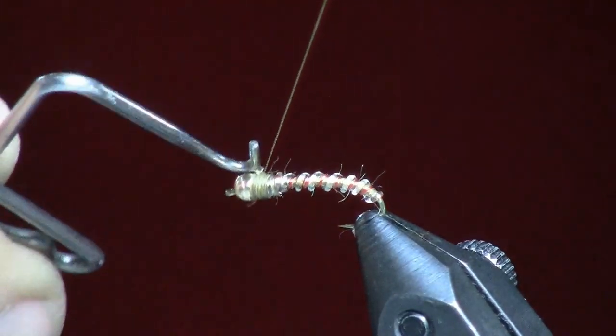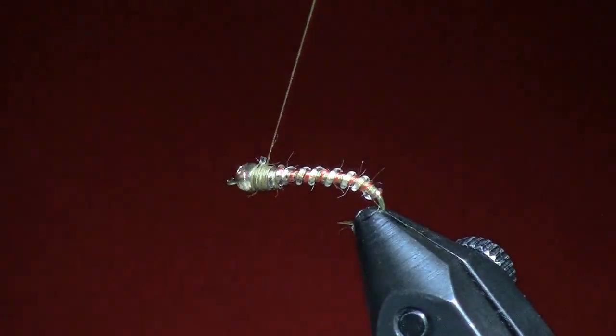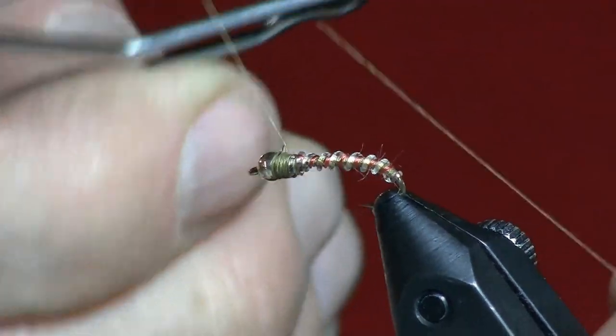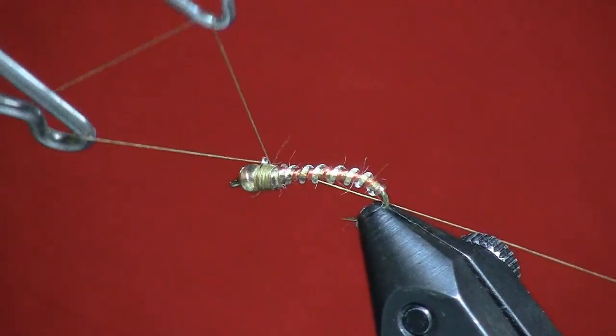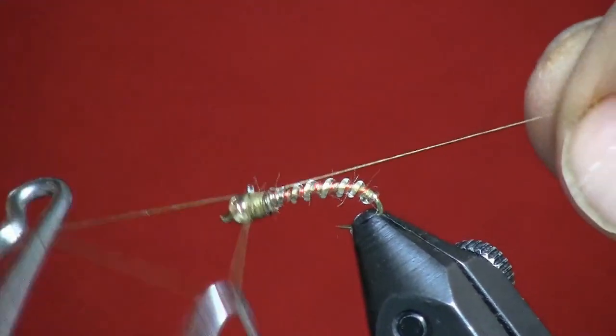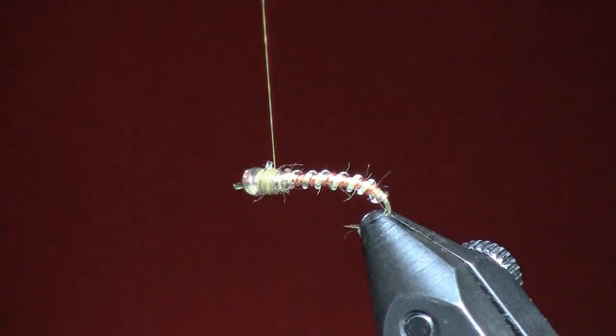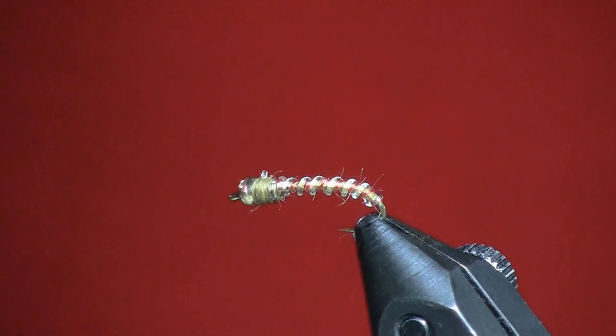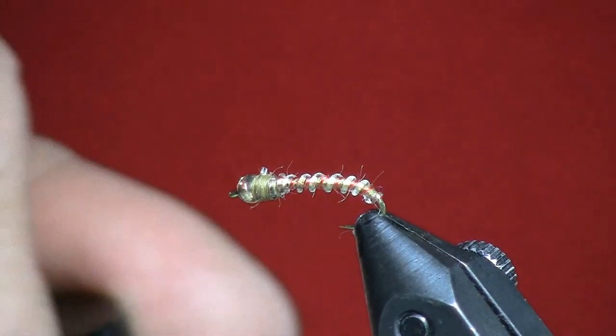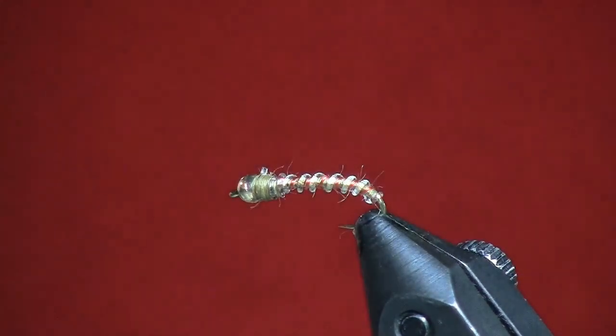If I were not going to use any cement, I oftentimes go ahead and just throw on a second whip finish. But I'll show you what I and a lot of folks do is we'll just go ahead and take our head cement and coat this whole fly down.